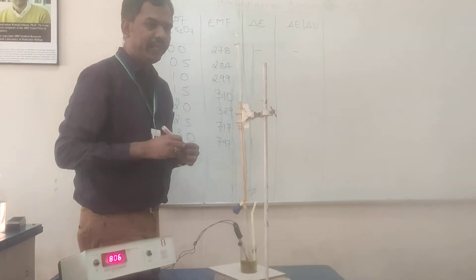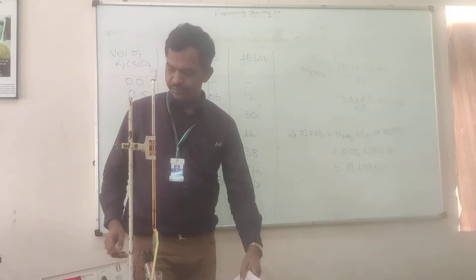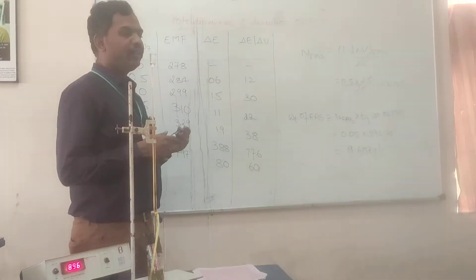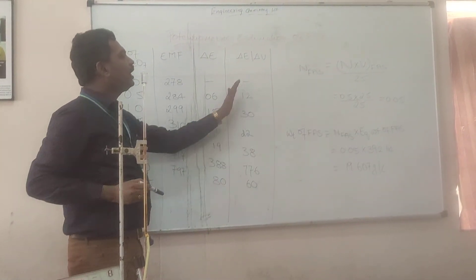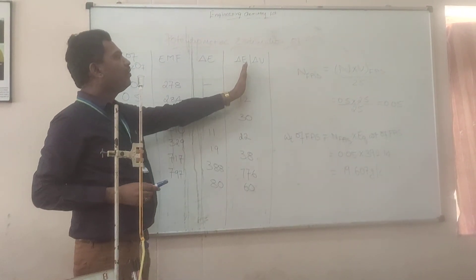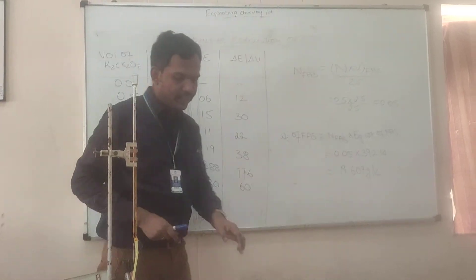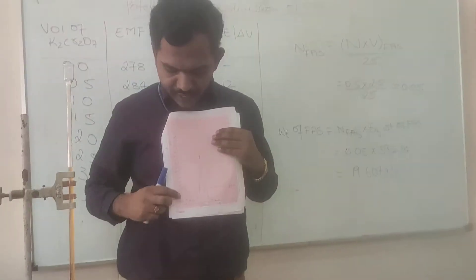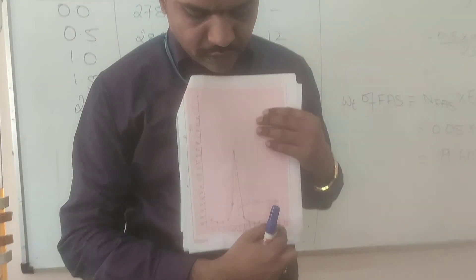So, we are going to calculate delta E for all the values and calculate delta E by delta V. So, we are going to plot a graph of delta E by delta V versus volume of K₂Cr₂O₇. The graph we get like this. So, delta E by delta V is on y-axis and x-axis is volume of K₂Cr₂O₇.